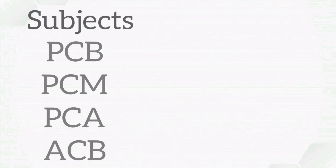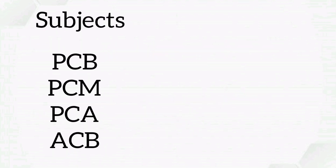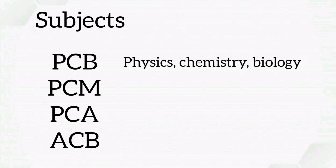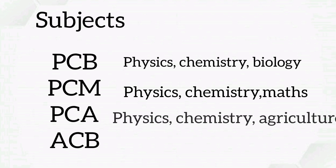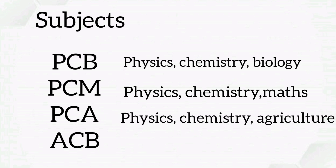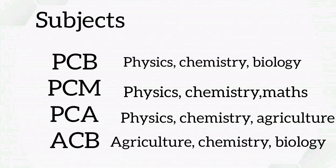The subjects of exam: Candidates have to attempt only 3 subjects, meaning the paper will consist of 3 sections. For example, PCB — that is Physics, Chemistry, Biology; PCM — Physics, Chemistry, Mathematics; and ACB — Agriculture, Chemistry, Biology.